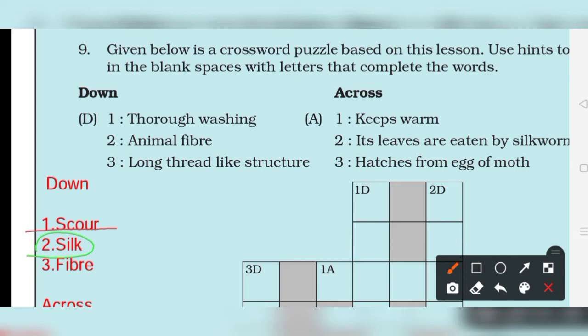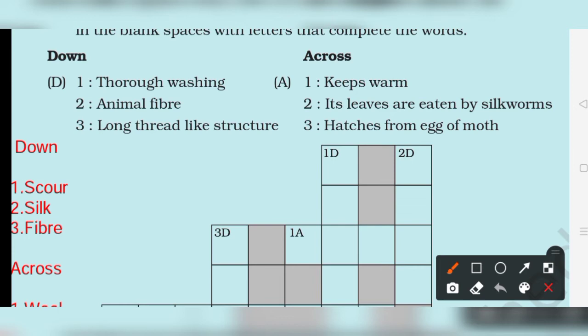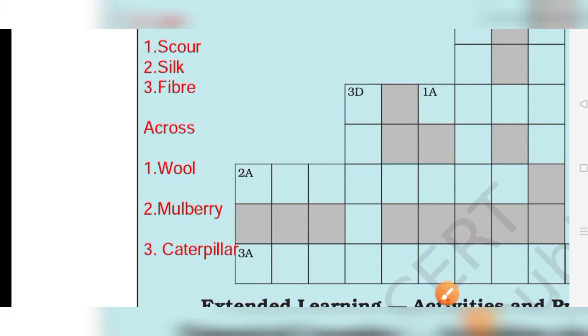For the down clues: second is animal fiber, and third is a long thread-like structure which is called fiber. For the across clues: the first one is 'keeps warm' — what keeps us warm? That is wool. The next is leaves eaten by silkworms — that is mulberry leaves. And the one that hatches from the egg of a moth is a caterpillar.